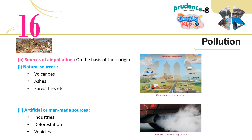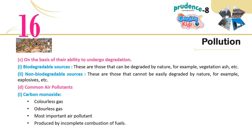Sources of air pollution on the basis of their origin: 1. Natural sources — volcanoes, ashes, forest fire, etc. 2. Artificial or man-made sources — industries, deforestation, vehicles. On the basis of their ability to undergo degradation: 1. Biodegradable sources — those that can be degraded by nature, for example vegetation ash, etc. 2. Non-biodegradable sources — those that cannot be easily degraded by nature.